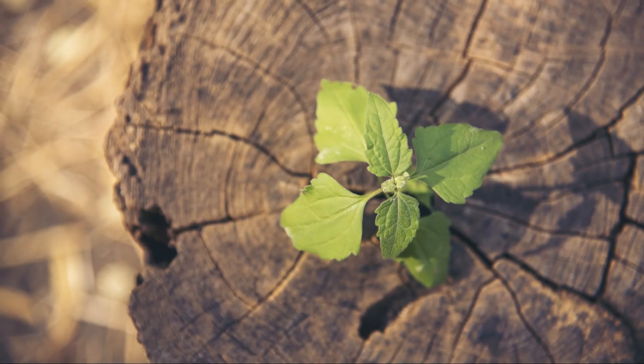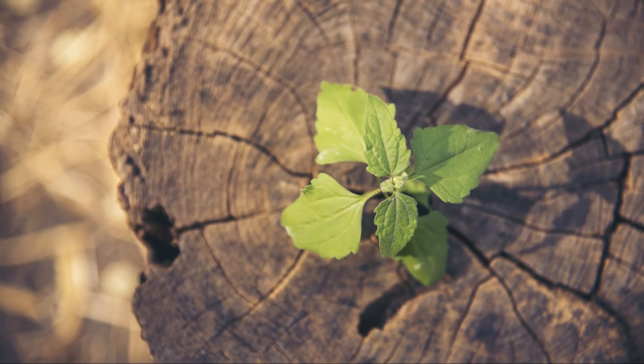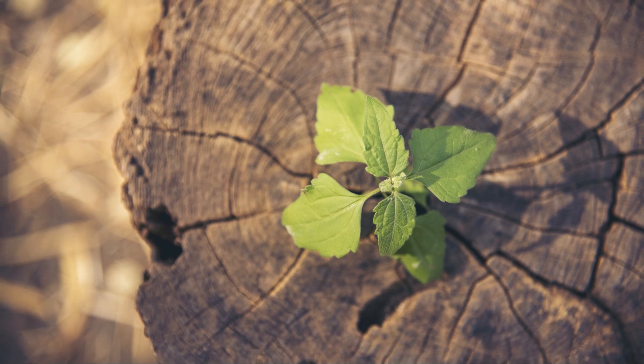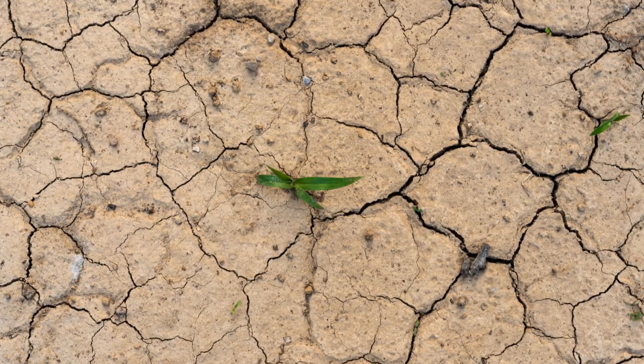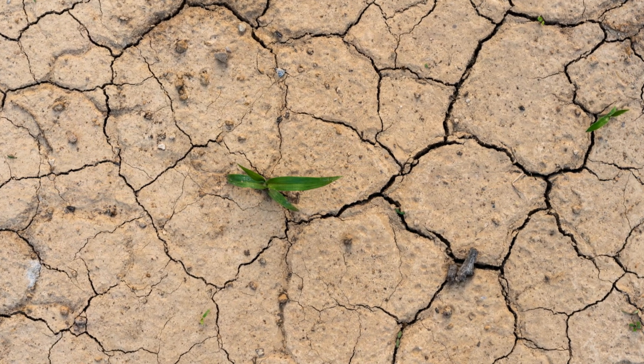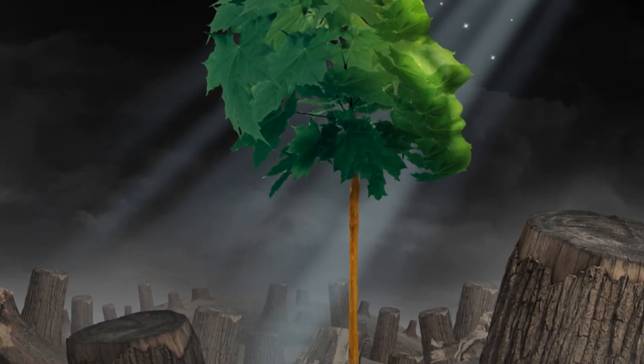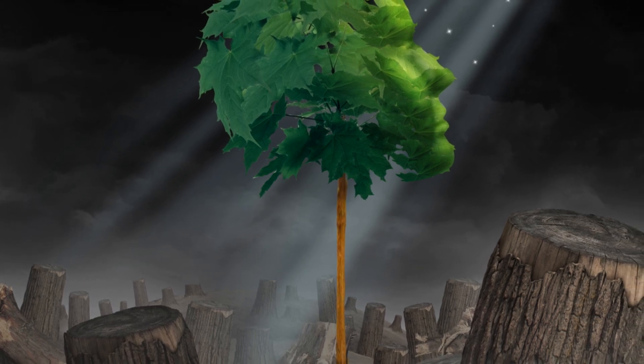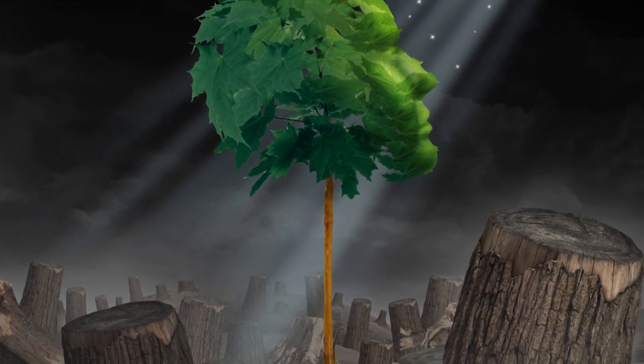These mass extinctions, while seemingly random acts of destruction, exhibit a pattern of destruction followed by renewal. Each event, while decimating existing life forms, created opportunities for new species to evolve and flourish. This cycle of death and rebirth suggests that Earth possesses an inherent ability to recover from even the most catastrophic events.